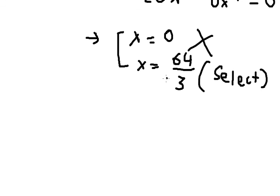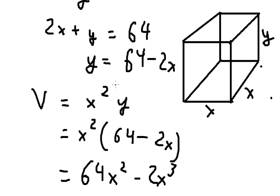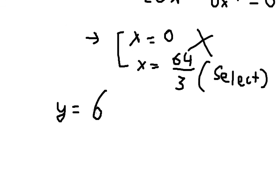After we have x, we can find the value of y. So y equals 64 minus 2 times 64 over 3, which equals 64 over 3.